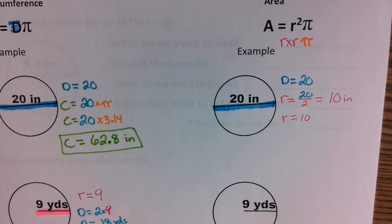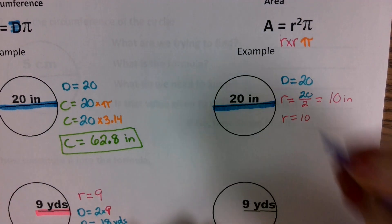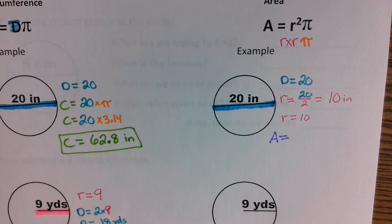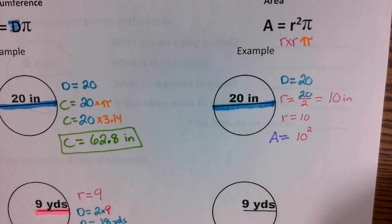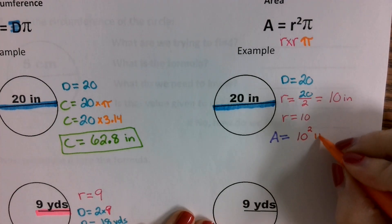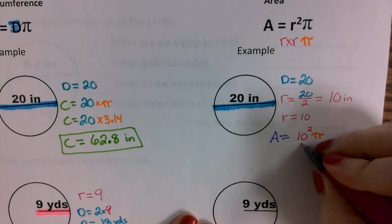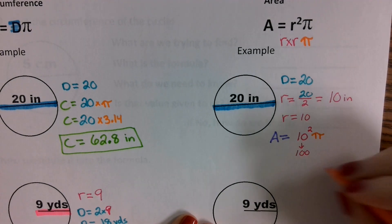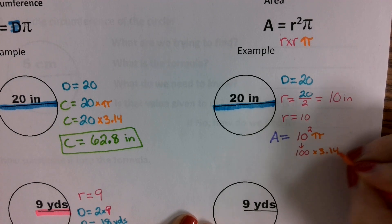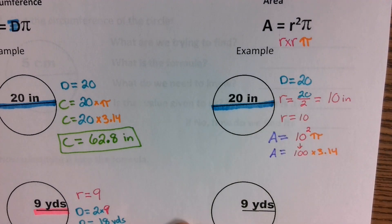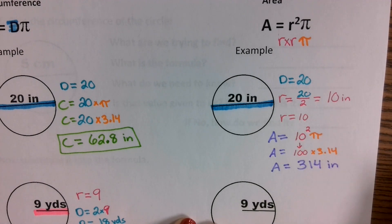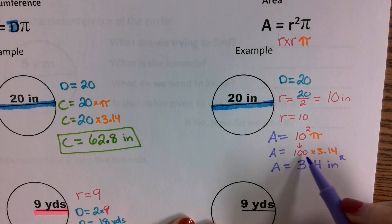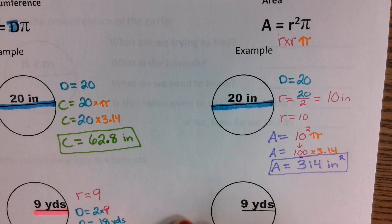Now when we plug it into our formula for area — area is found by taking the radius and squaring it, or radius times radius — so 10 to the 2nd power, then we multiply it by pi. What's 10 squared, or 10 times 10? 100. So we're going to do 100 times 3.14. That gives us our area. Area is going to be equal to 314 inches squared — since it's area, area is always squared, so you put a little 2 in the corner.